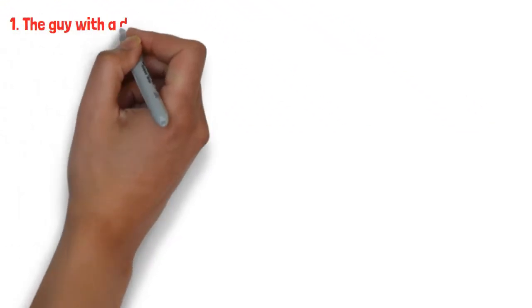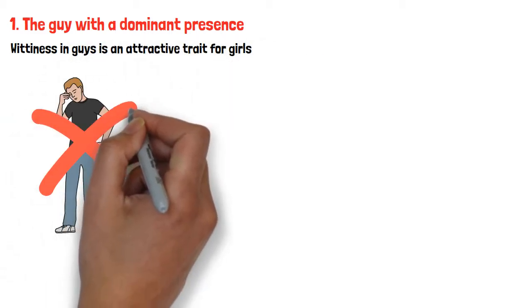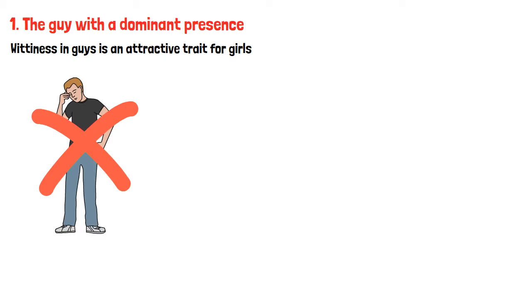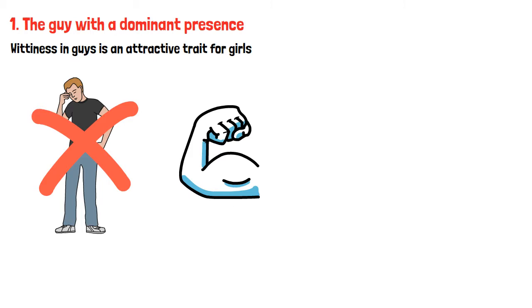1. The guy with a dominant presence. Strength in guys is an attractive trait for girls. No girl wants to settle for someone who is too sensitive, dumb, and submissive. She wants her guy strong. He should be the one who could easily control the situation and take the lead in the room and other areas of life.